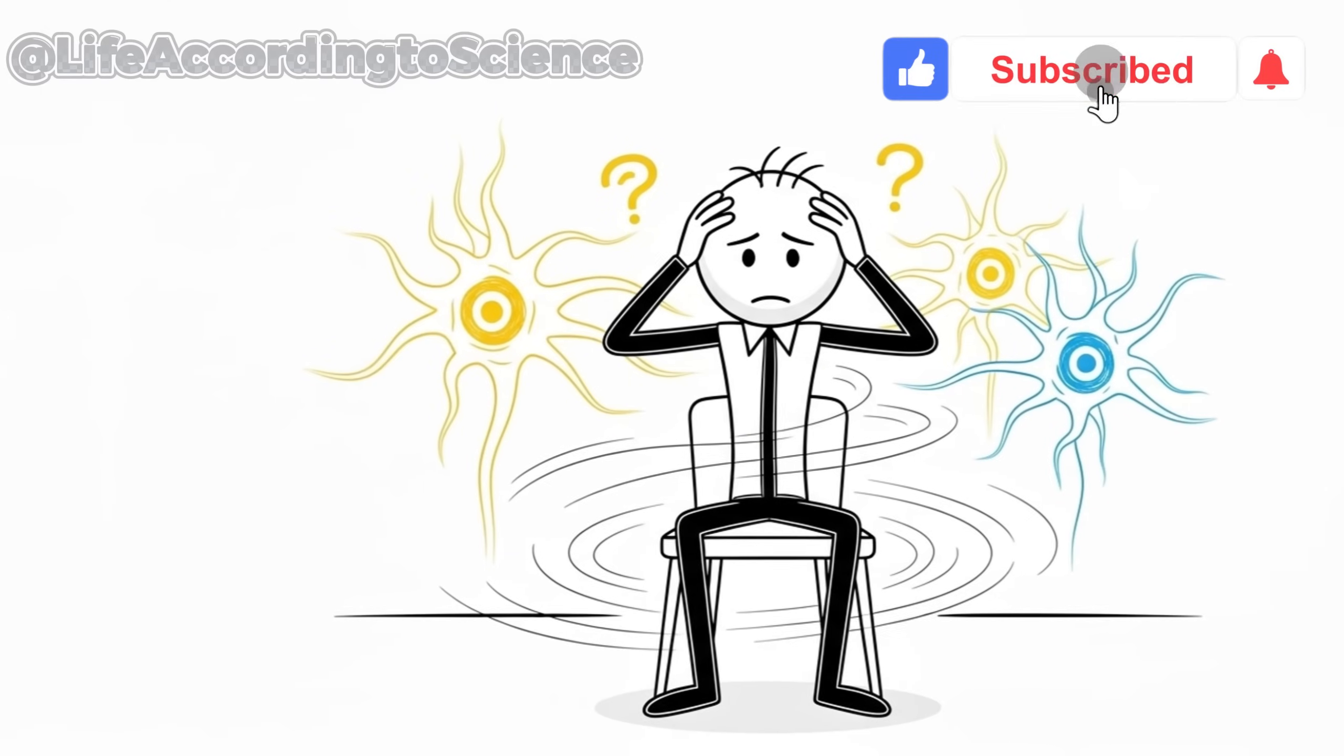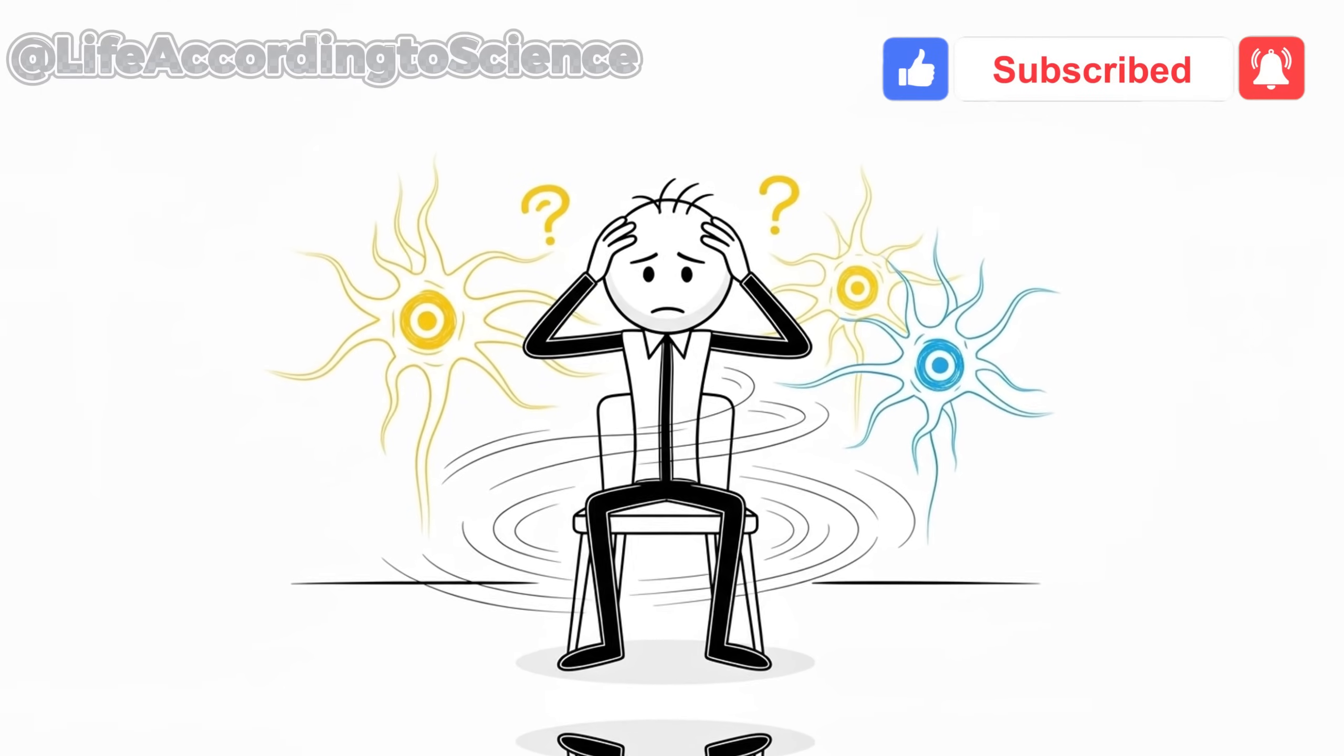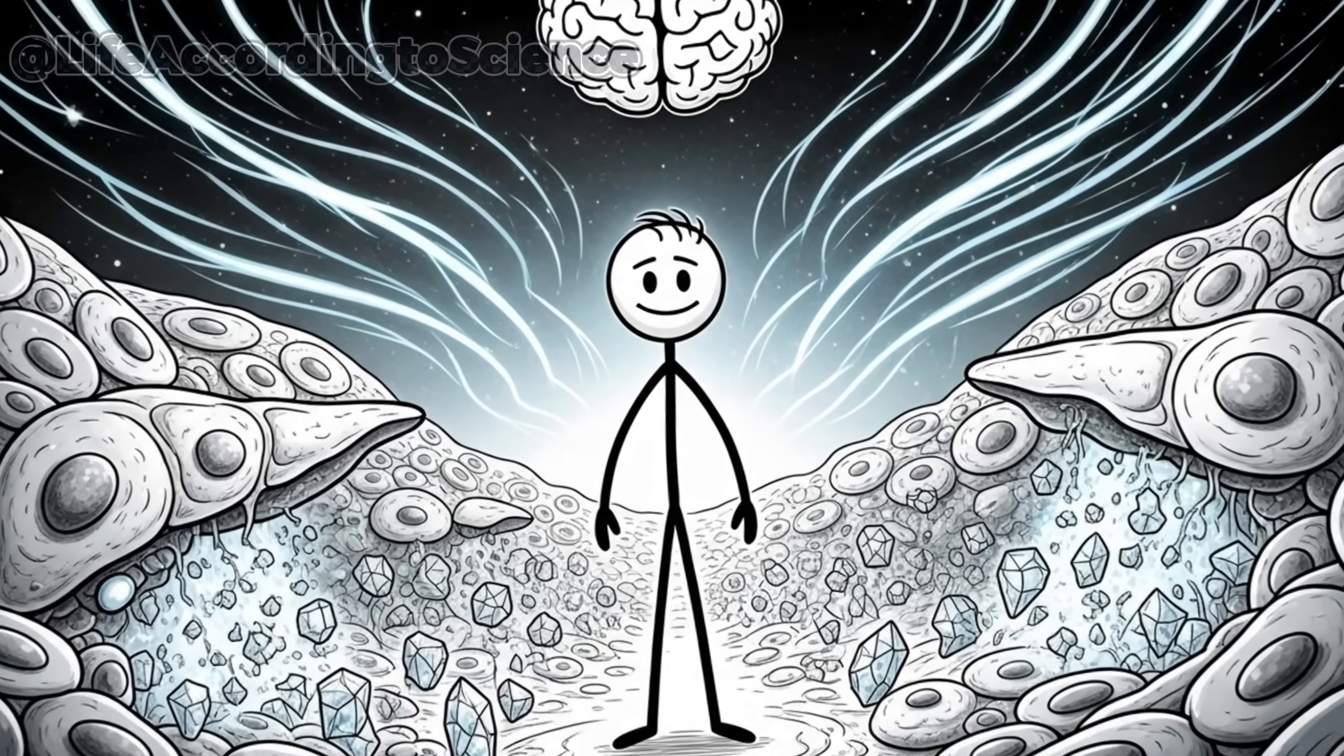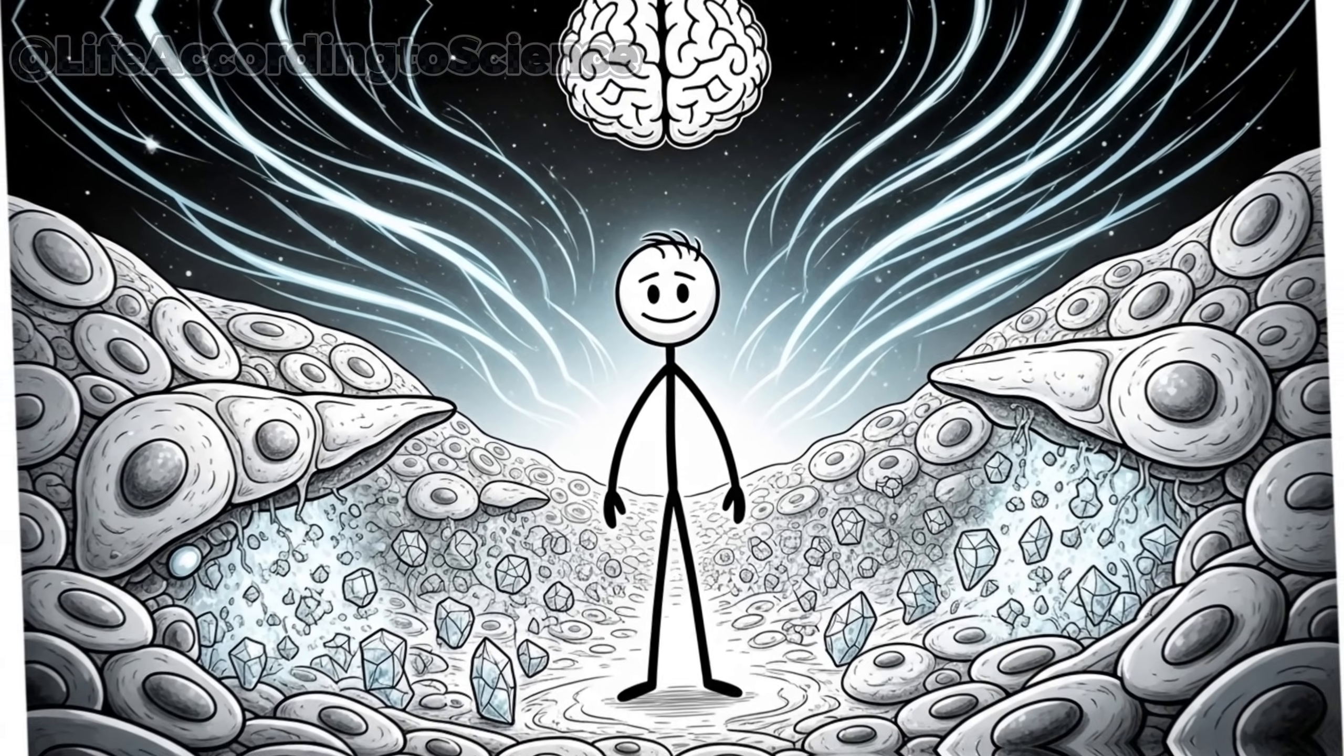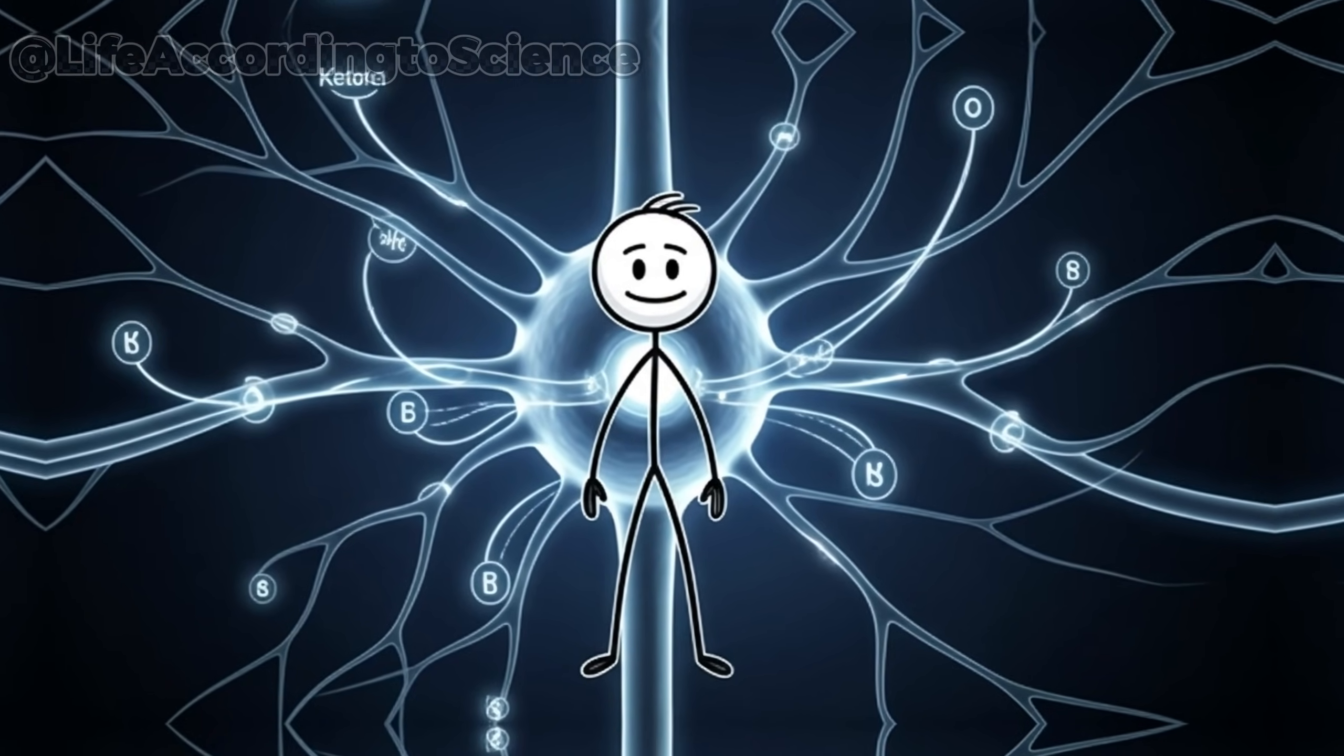That's your brain saying, hey, something's different here. But this reaction isn't a malfunction. It's the signal of a great transition about to unfold. As blood sugar levels decline, the liver begins producing molecules called ketones, made from fat. These tiny energy packets are pure brain fuel.